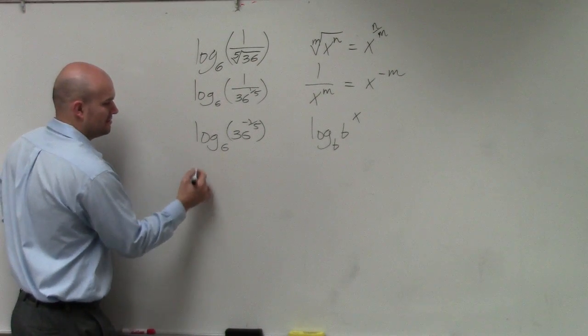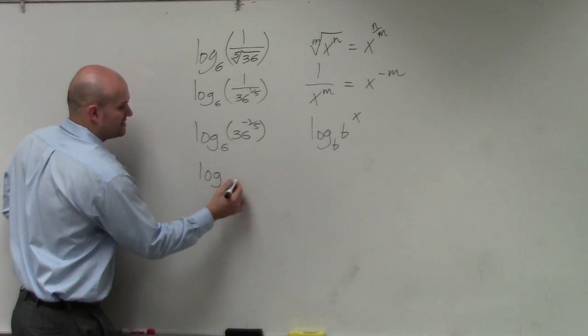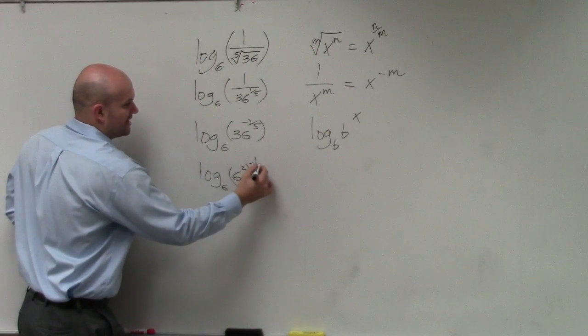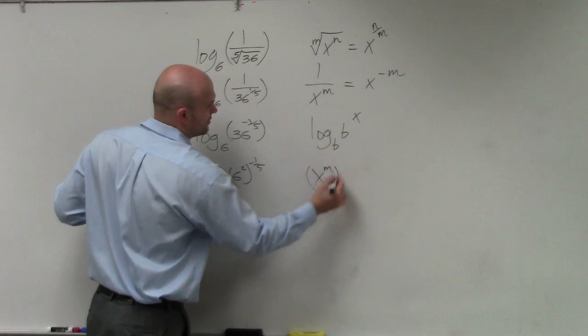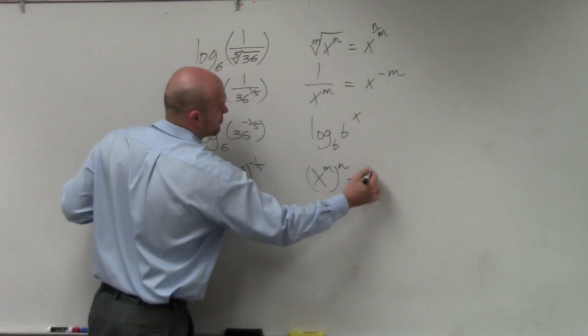We'll do it 6 squared, right? So log base 6 of 6 squared raised to the negative 1-fifth. And then just remember the power rule. If you have an exponent raised to a power, you multiply the powers.